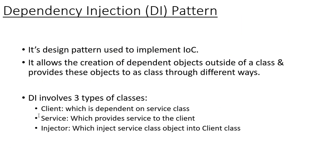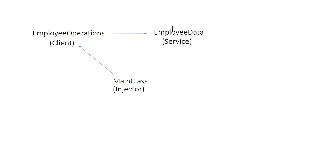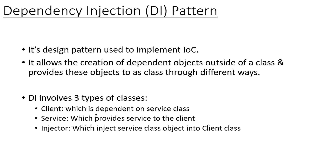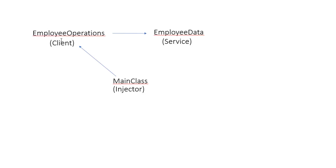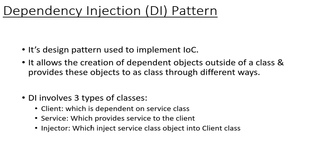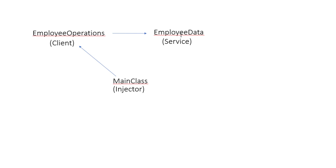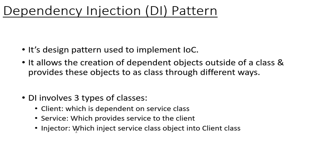The dependency injection pattern involves three types of classes. The first is the Client, which is dependent on the service class. The second is the Service, which provides a service to the client. In our example, EmployeeOperation is the client — it is dependent on EmployeeData. EmployeeData is the service, providing service to the client. The third type is the Injector class, which injects the service class object into the client class.